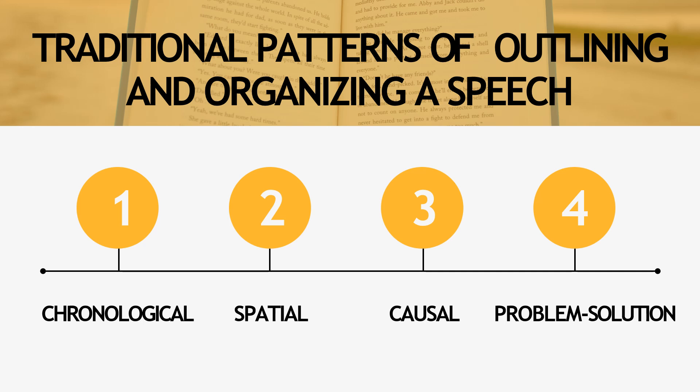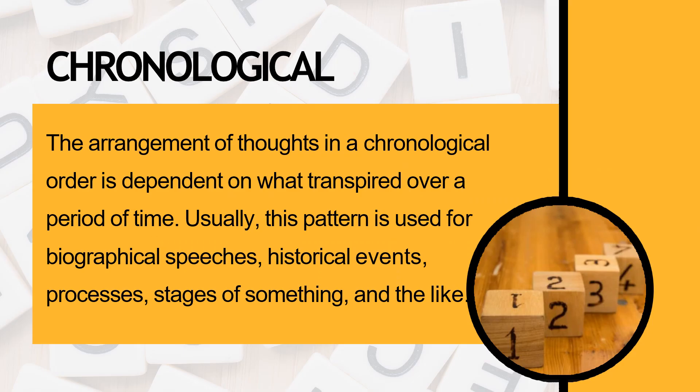Now let's proceed with the traditional patterns of outlining and organizing a speech. We have four: chronological, spatial, causal, and problem-solution. The chronological pattern arranges thoughts in chronological order, dependent on what transpired over a period of time — arranging the sequence of events. This pattern is usually used for biographical speeches, historical events, processes, and stages of something.